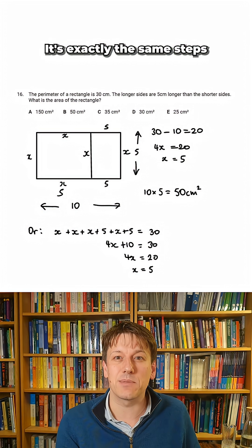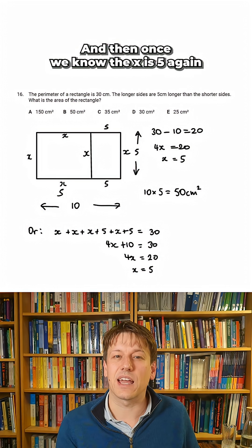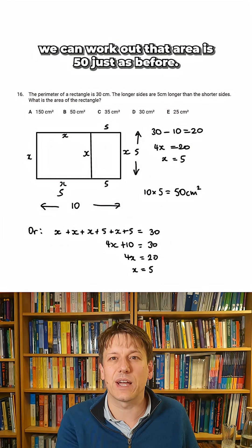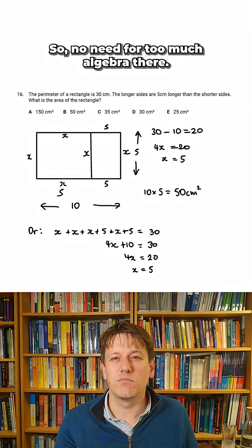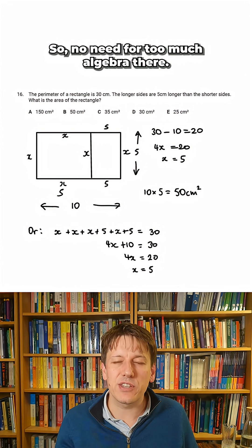It's exactly the same steps, just written down with algebra, and then once we know that X is 5, again we can work out that area is 50 just as before. So no need for too much algebra there,